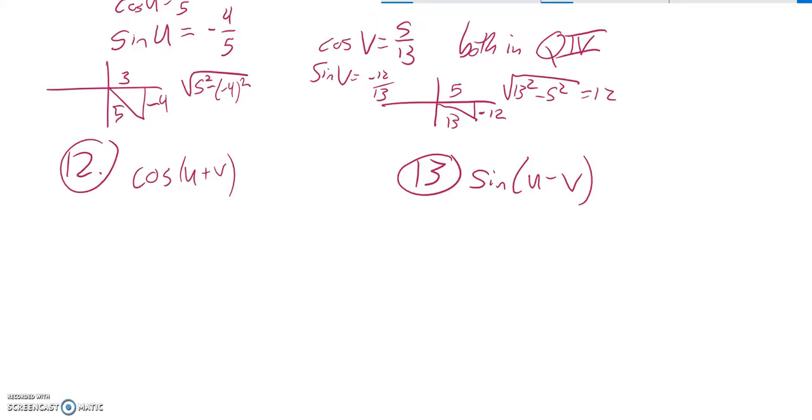I can split this up using that addition relationship for cosine. So it's cosine of the first one, cosine of the second one, opposite operator, sine of the first one, sine of the second one.